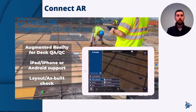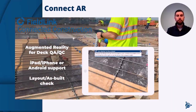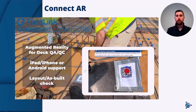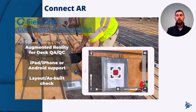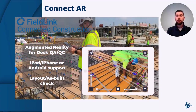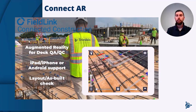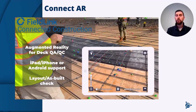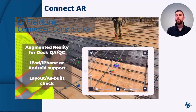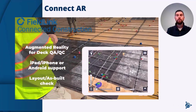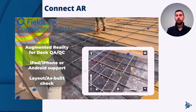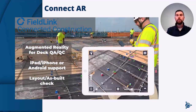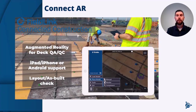The latest capability, getting back to the total station: if you've already laid out points, you can now get that point data via Connect AR for a secondary QA/QC check on where those points are in space. If anything was staked incorrectly, you can go back and revisit that location — great for after-the-fact checking.